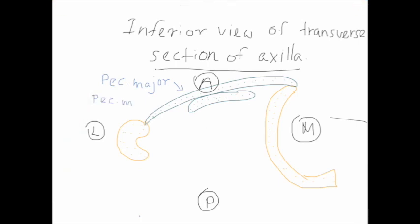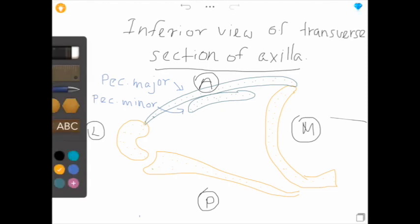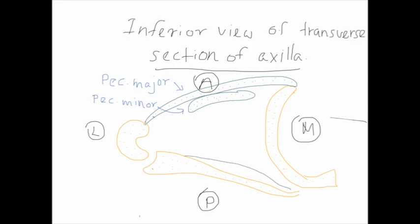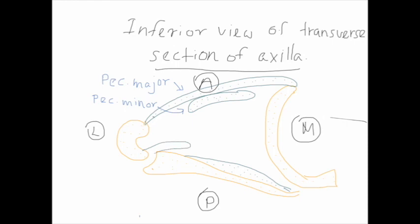Now I am labeling the pectoralis major and minor muscles. This is the posterior wall and this is the scapula. The posterior wall of the axilla is formed by three muscles: subscapularis, teres major, and the tendon of latissimus dorsi. Subscapularis muscle originates from the subscapular fossa and is inserted into the lesser tuberosity of the humerus. Teres major muscle originates from the inferior angle of the scapula and is inserted into the bicipital groove.